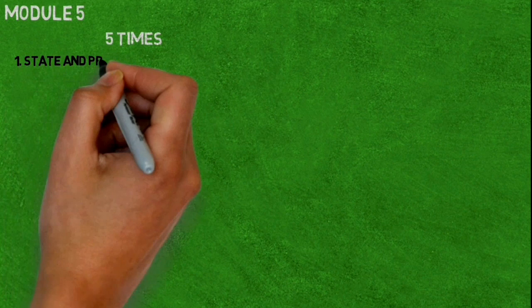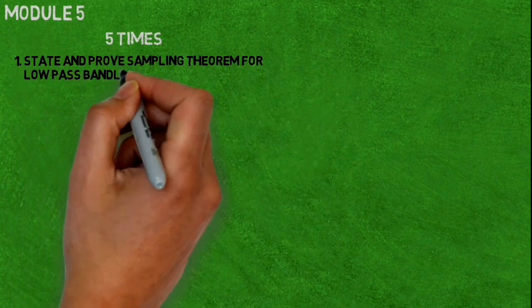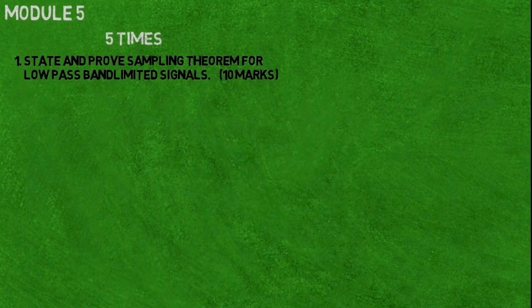Let's see Module number five. Five times repeated question is: state and prove sampling theorem for low pass band limited signals. It comes for 10 marks.